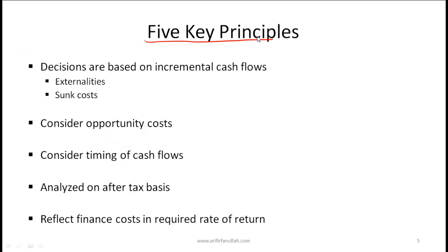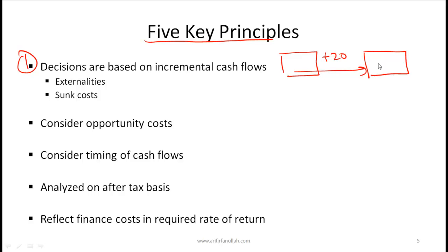There are five key principles of capital budgeting, and from an exam perspective this is very important. The first principle is that decisions are based on incremental cash flows. For example, if you are currently running a machine with annual cash flows of plus 20 million a year, and you replace it with a newer machine that generates total cash flow of 30 million, the analysis should be based on the incremental cash flow of 10 million.